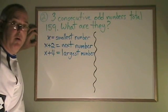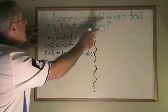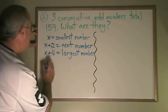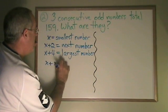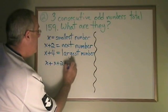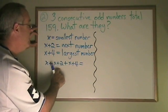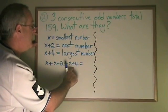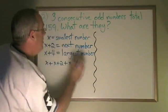Now I can make my equation. That's step 2 in our process. Totaling 159 means we're adding them together. So, we take the smallest number, we add to it the next number, and we add to that the largest number, which is x plus x plus 2 plus x plus 4 as I've defined them, equals the total 159.